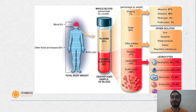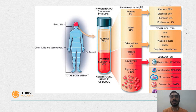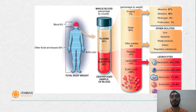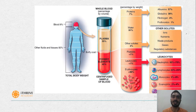Now talking about the formed elements. Platelets are mainly responsible for the formation of clots. Then we have leukocytes, which are WBCs. WBCs are further divided into five types: neutrophils, lymphocytes, monocytes, eosinophils, and basophils. These cells are mainly responsible for the defense mechanism. Then come the erythrocytes, known as RBCs. Their main function is to transport oxygen to each and every cell present in our body.